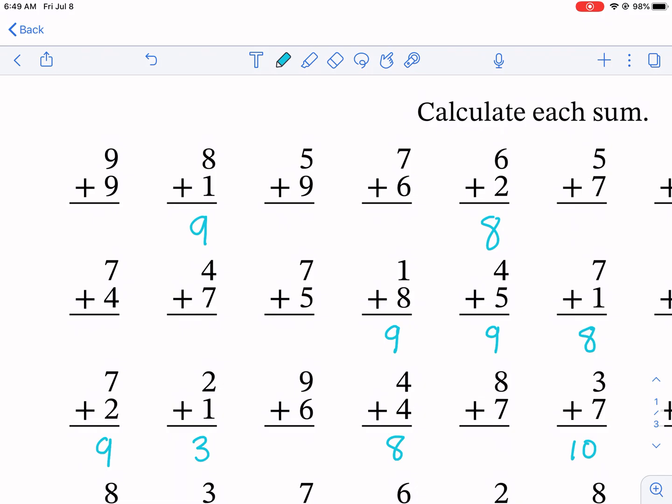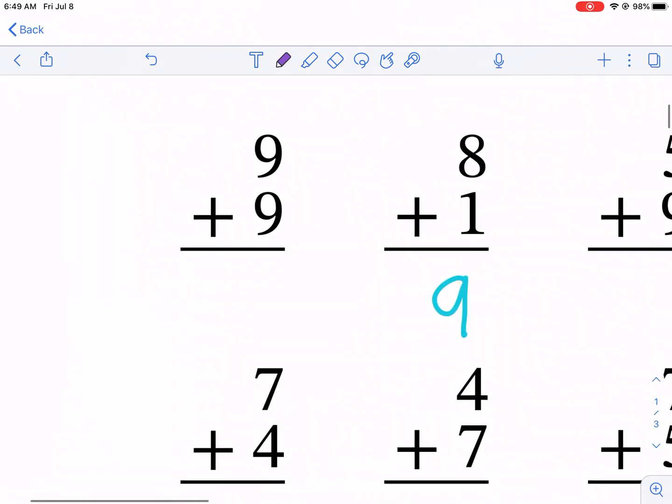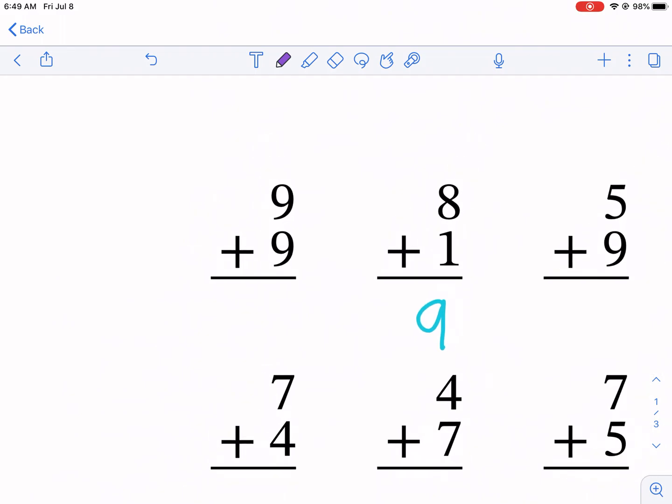Now for those values that are bigger than 10, we're going to switch colors here. If you're struggling with adding numbers like that, I always like to think of numbers that add up to 10 as my baseline. For example,